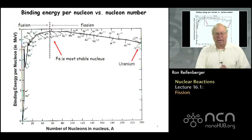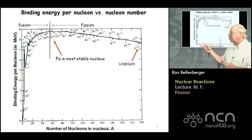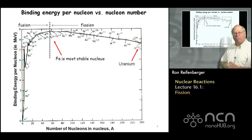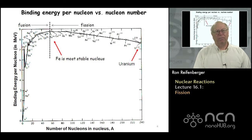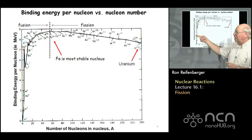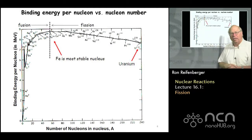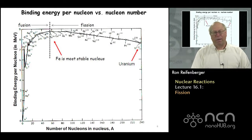The other important ingredient is the binding energy per nucleon versus nucleon number chart. On the x-axis we plot the number of nucleons in the nucleus; we calculate the total binding energy and divide by the number of nucleons to get the y-axis. What we find is that the highest binding energy per nucleon occurs at iron, making iron the most stable nucleus, because combining protons and neutrons to form iron yields the most binding energy per nucleon.